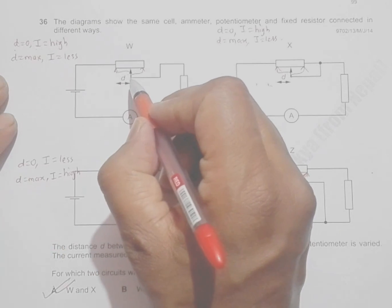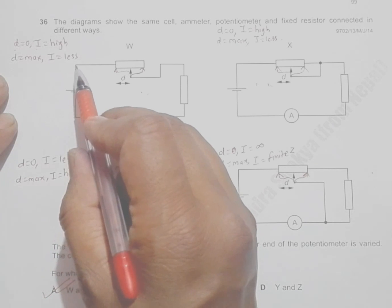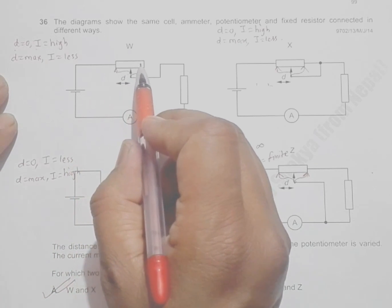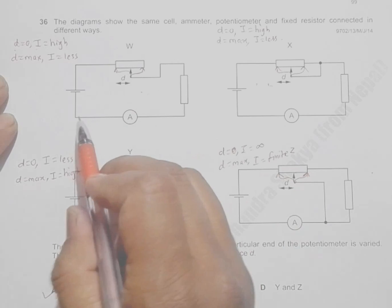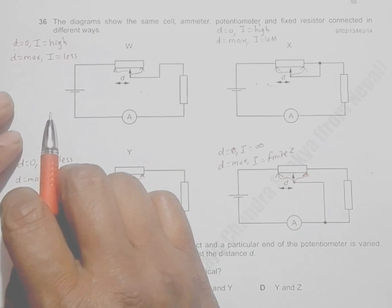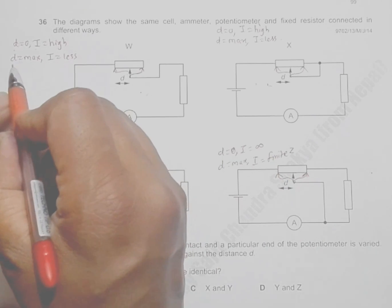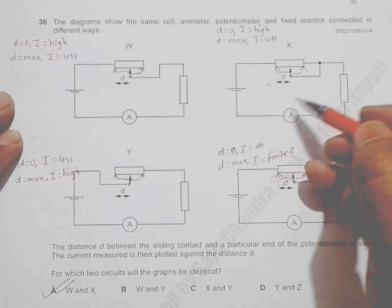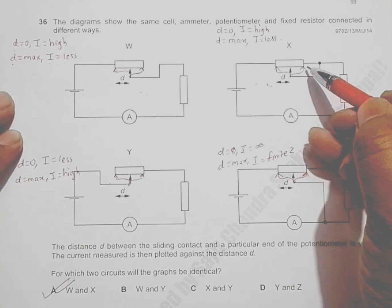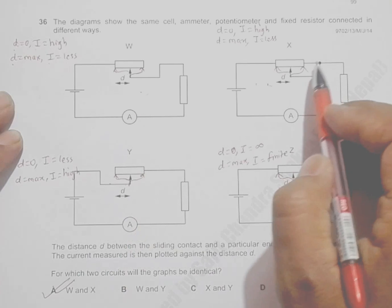Now if the contact is moved to the far end, current flows through both resistors, making the total resistance greater and the current less. So when d equals maximum, current is low. In the second diagram, the circuit looks slightly different — there is a connection here that wasn't present before.